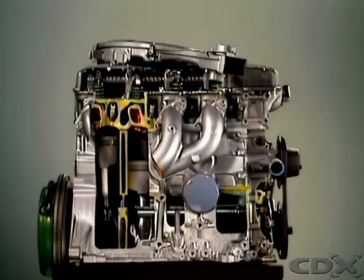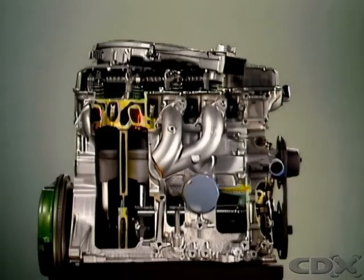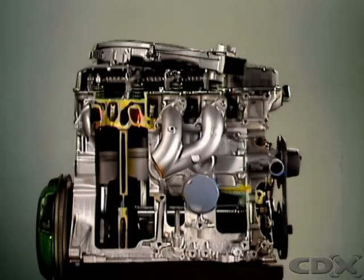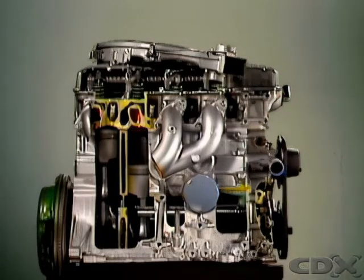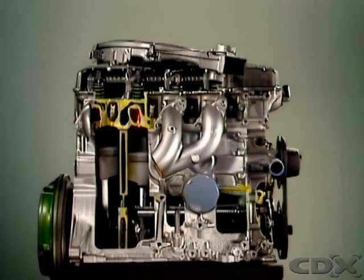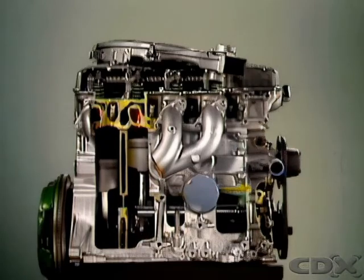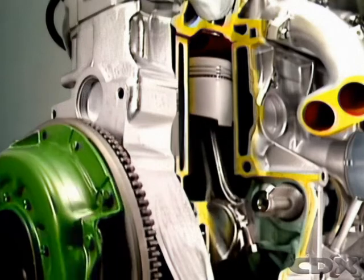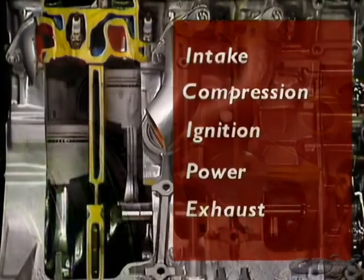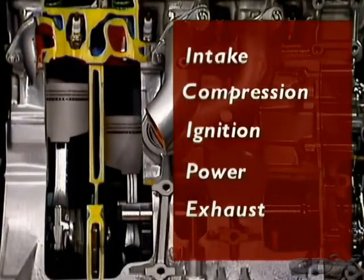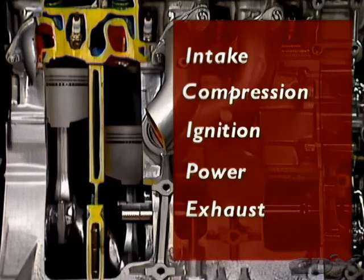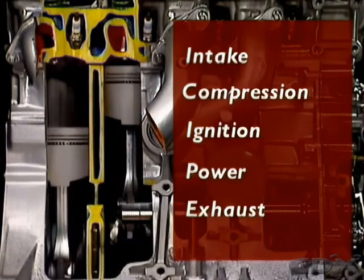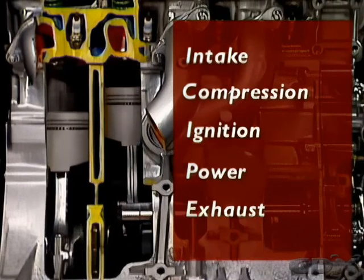What is a stroke? It's the movement of the piston from top dead center to bottom dead center. Calling an engine four-stroke means its engine cycle has four strokes. A four-stroke gasoline engine uses internal combustion, so those four strokes must include the five key events common to all internal combustion engines: intake, compression, ignition, power, and exhaust.